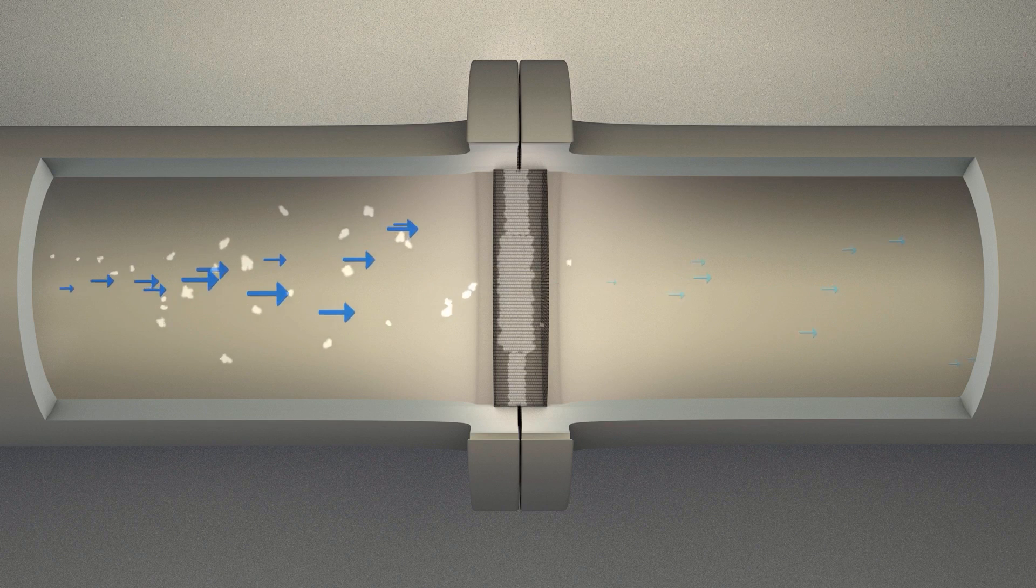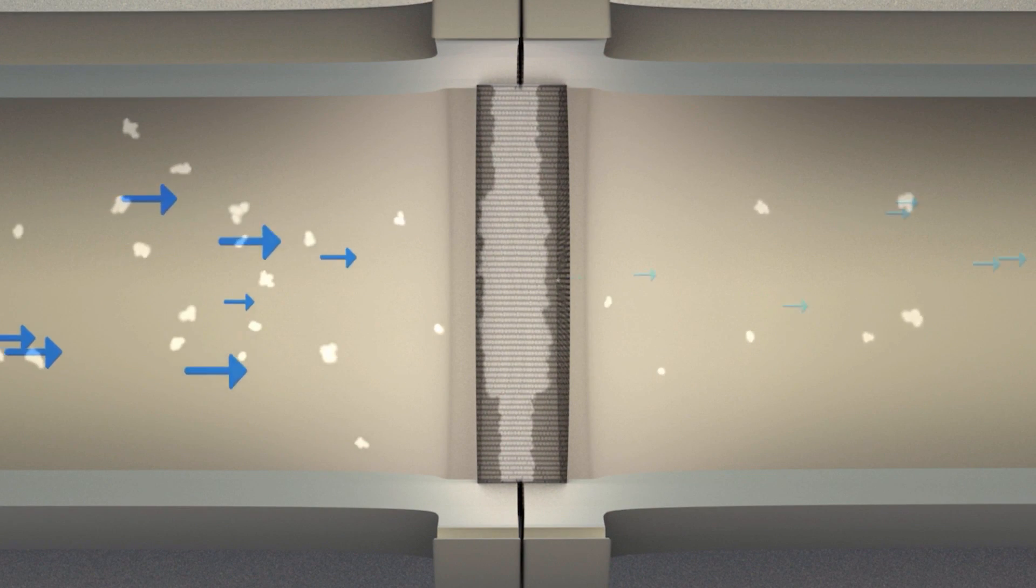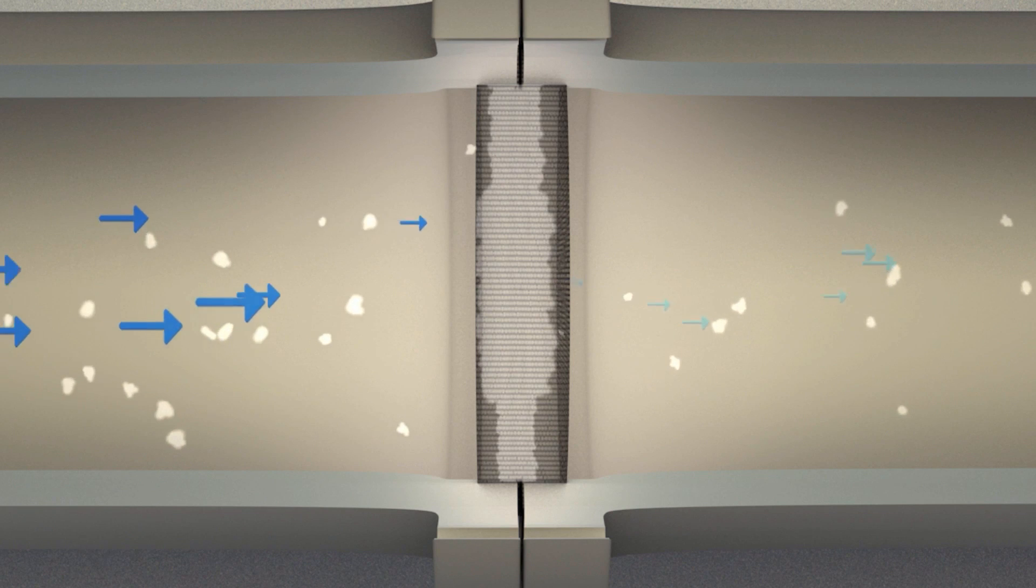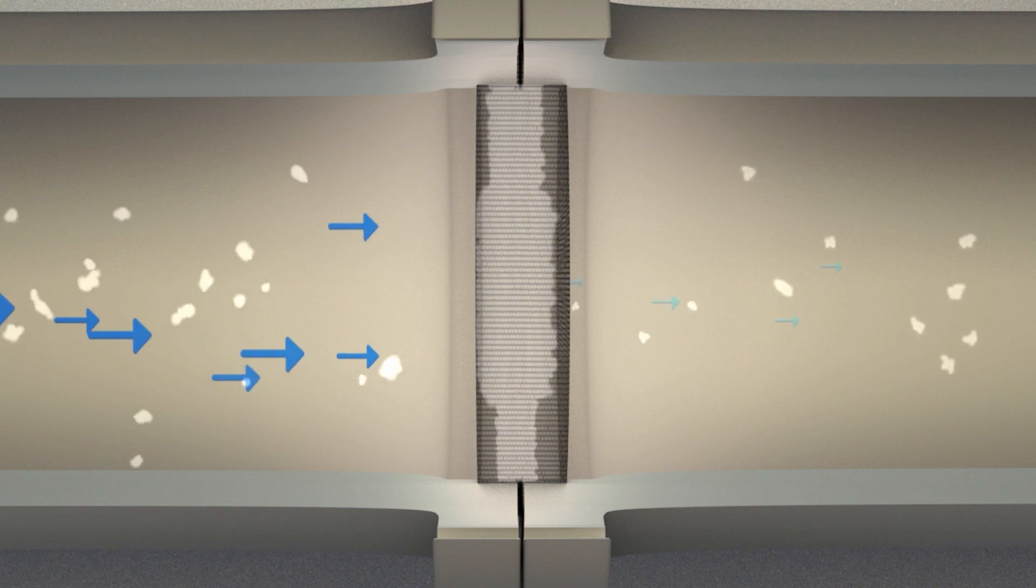Saturated filters may also begin to shed captured particles. With the filter no longer functioning properly, the contaminants can escape into the process. This is why proper monitoring of pressure drop is crucial. So how can we measure the DP?